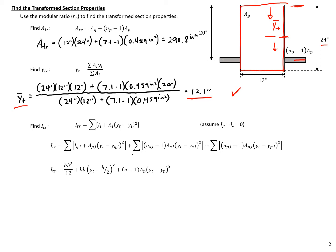Next we find the transformed moment of inertia, I_tr, using the parallel axis theorem: summing (I_component plus A·d²) for each component. We assume prestressing steel has zero self-moment of inertia, so for the prestressing we only consider the A·d² term. For the gross section we include both its own moment of inertia and its A·d² component, and for the prestressing only the A·d² component.